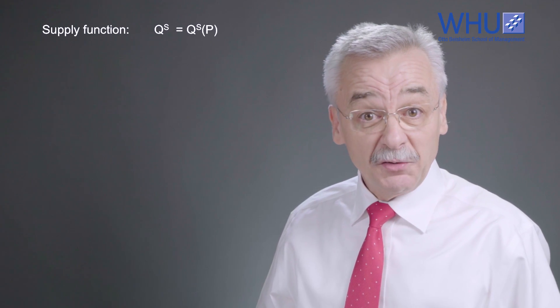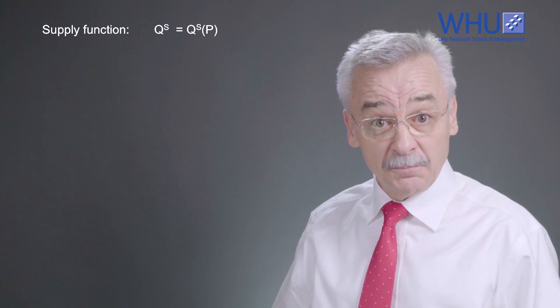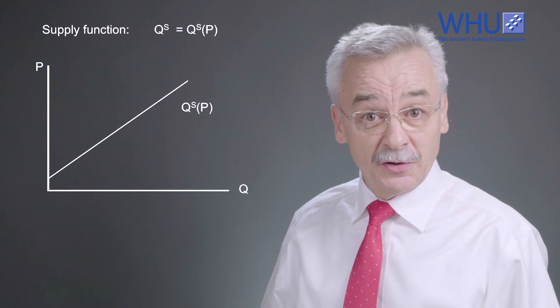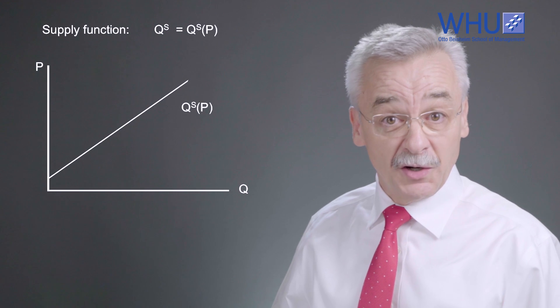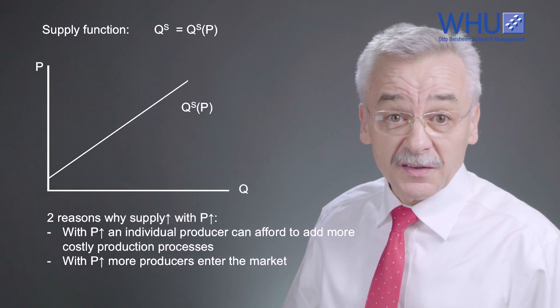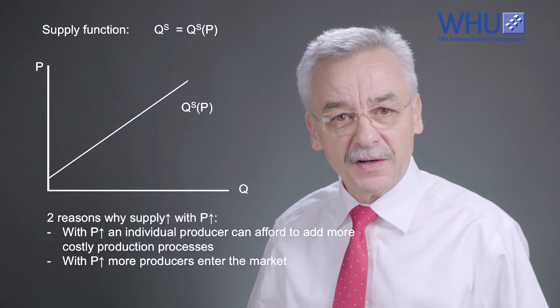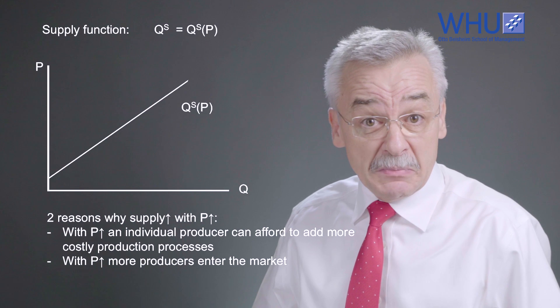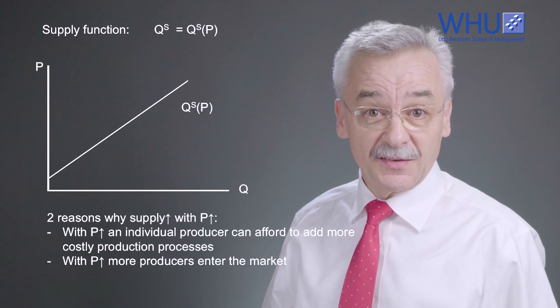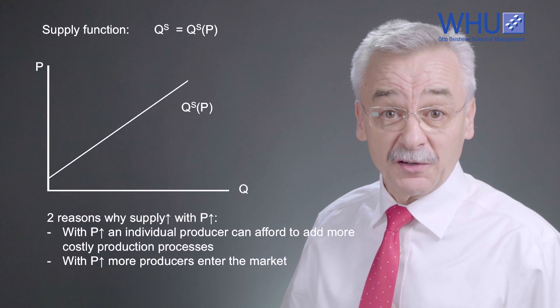Let us focus on the first supply factor: the price of the good. We can write a supply function where S represents supply, Q the quantity, and P the price level. In a price-quantity diagram, this curve is upward sloping, running from the lower left to the upper right. Two reasons explain this: first, with higher prices producers can afford more expensive processes, such as overtime or weekend work; second, with higher prices more producers enter the market because their costs can then be covered.